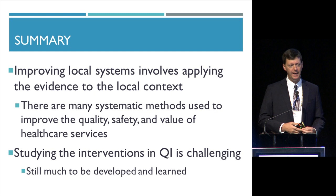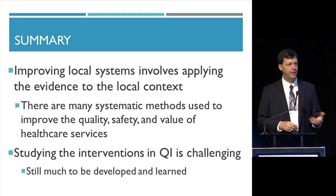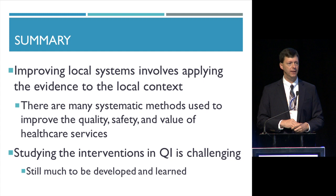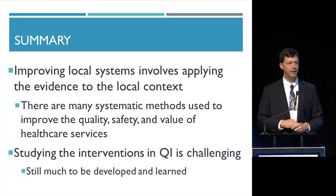SQUIRE is intended to acknowledge the context-dependent, complex, iterative nature of the work — the fact that the checklist changes all the time, and that's actually okay and needs to be reported. When you're trying to implement this at your site, you need to know that it's measuring the impact, discovery, and explanation of mechanisms. In summary, improving local systems involves applying evidence to the local context, and studying these interventions in QI is challenging. We have not yet fully developed the methods and skills to study and share these data and complete that cycle of the evidence ecosystem. Thank you.